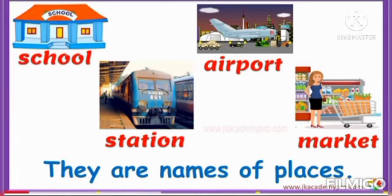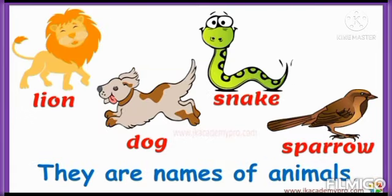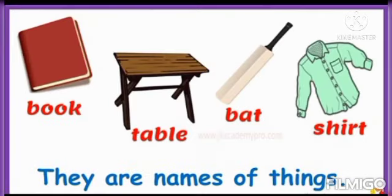Next is lion, dog, snake, sparrow. They are names of different animals. Next is book, table, bat, shirt. They are names of different things.